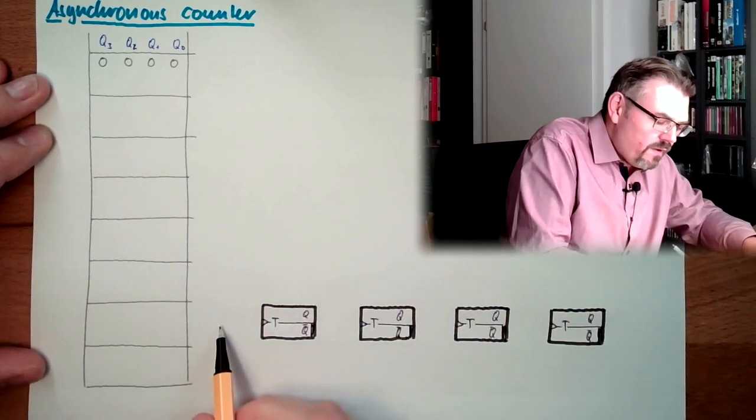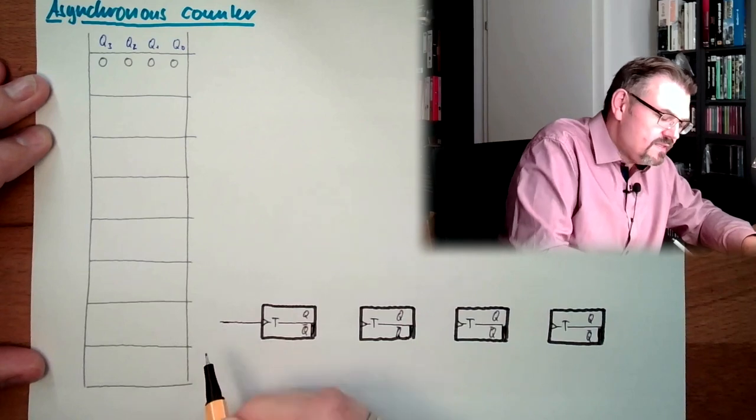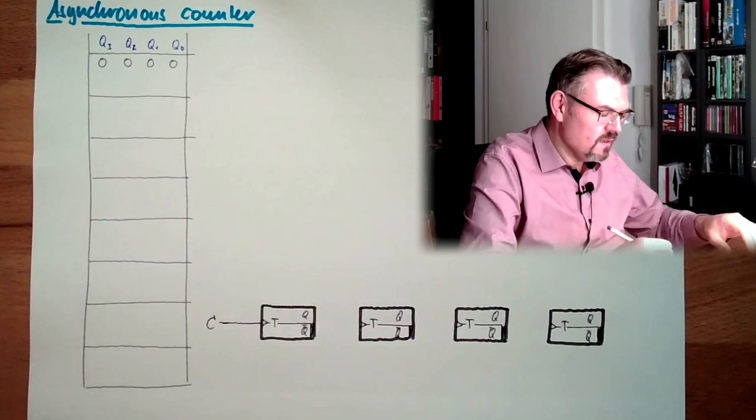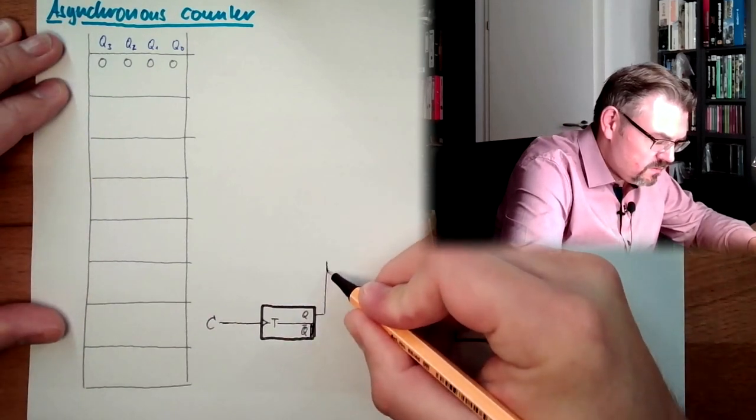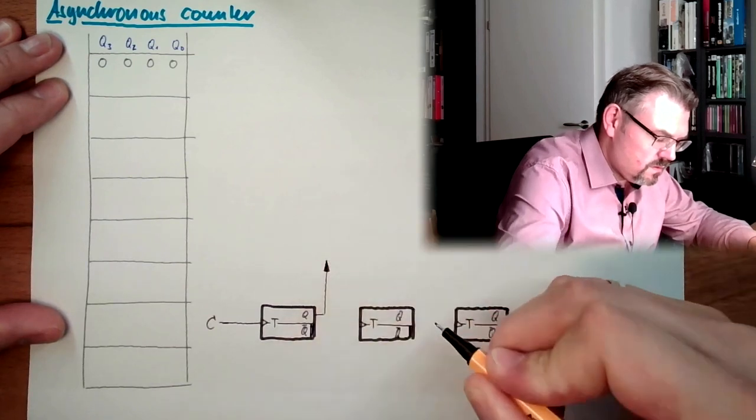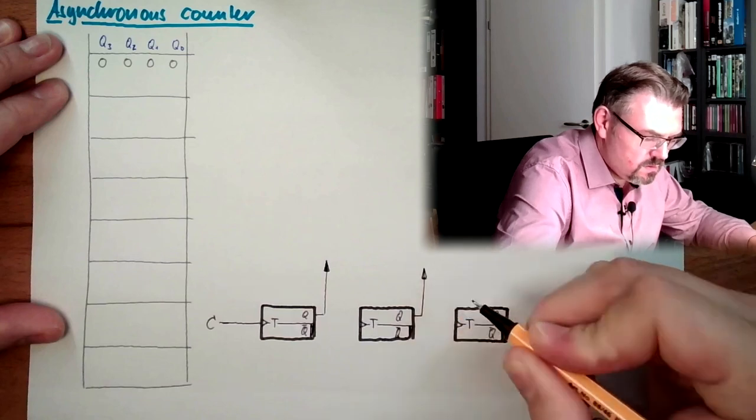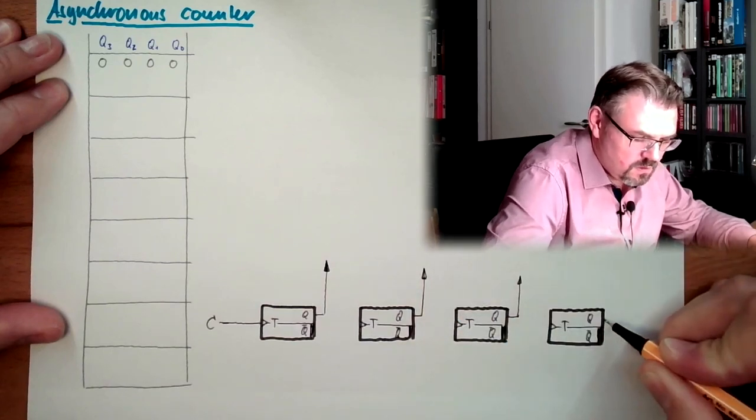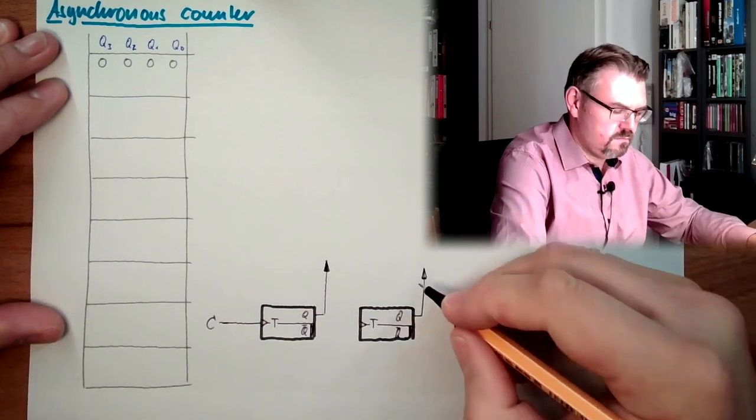And here we have the counter input, C. This is the signal we want to count. And let's say this is Q0, this is Q1, this is Q2, and this is Q3. All right.